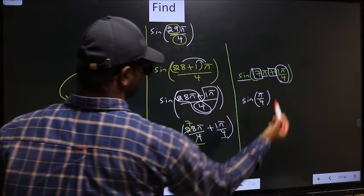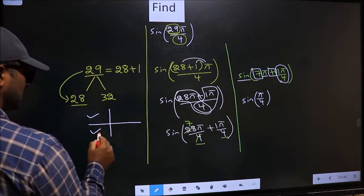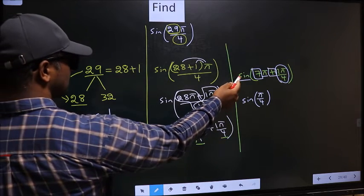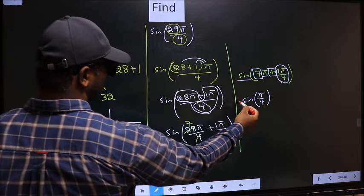Here we have plus, so the angle lies in the third quadrant. In the third quadrant, sine is negative, so put negative.